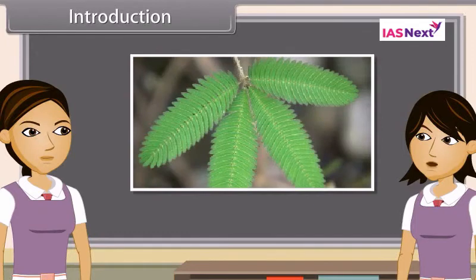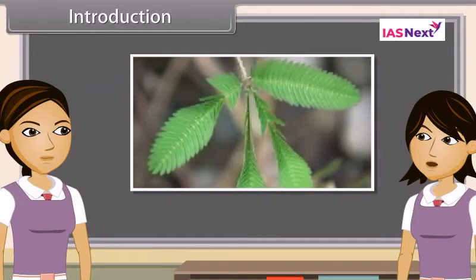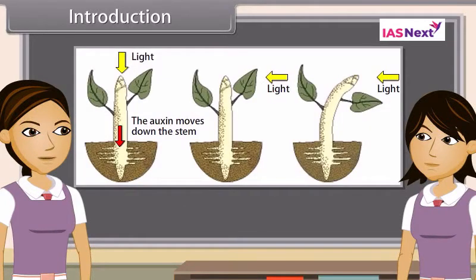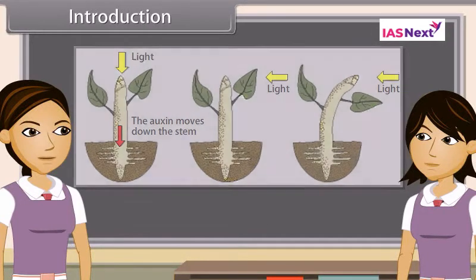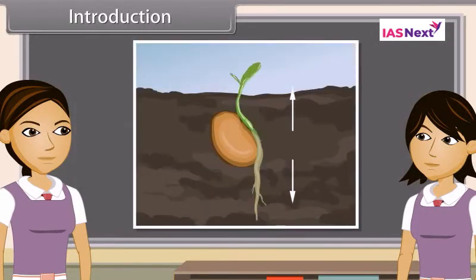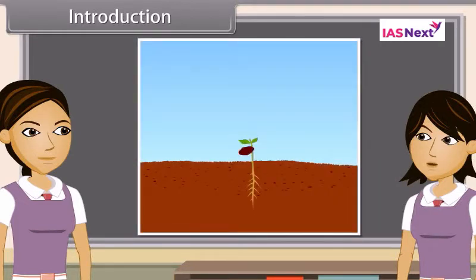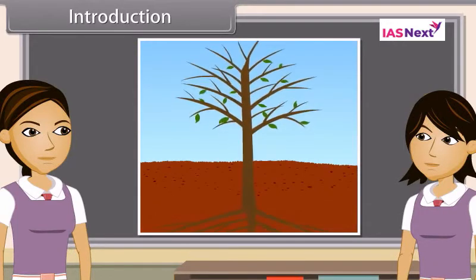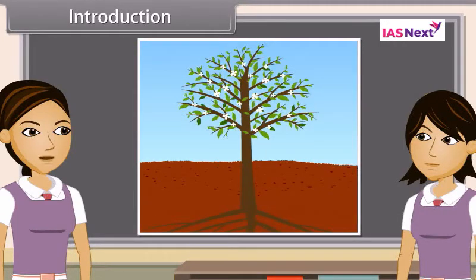Plants can sense the presence of stimuli and respond to them. The hormones in plants coordinate their behaviour by affecting the growth of a plant, and the effect on growth can result in the movement of a part of the plant like root or stem. Plants respond to various stimuli very slowly by growing.